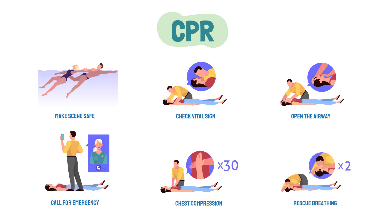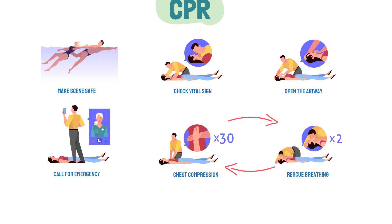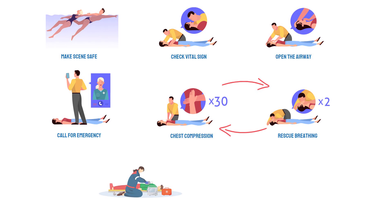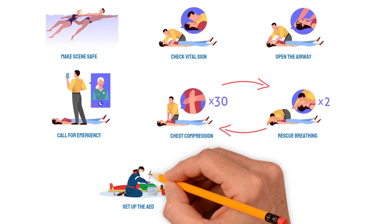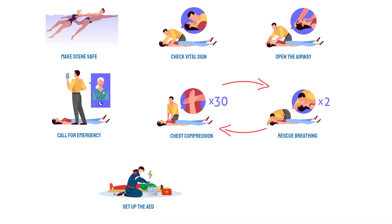Give 30 chest compressions followed by two rescue breaths, then repeat the cycle. When the AED arrives, attach the electrode pads and follow the spoken and visual commands of the device. It will determine if the patient has a life-threatening heart rhythm and deliver an electrical shock if necessary.